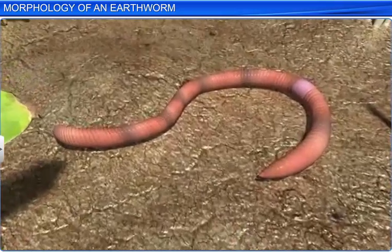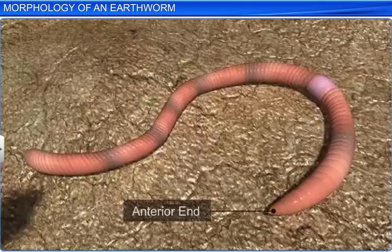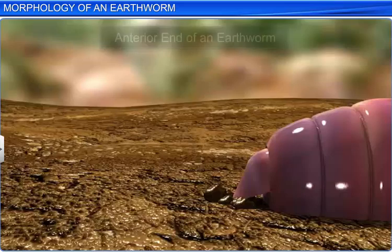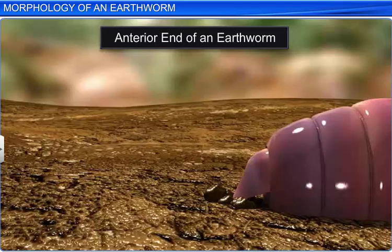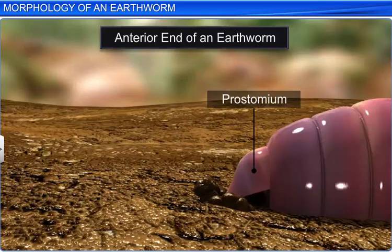The body of an earthworm can also be differentiated anteriorly and posteriorly. Although the anterior and posterior ends look similar, the anterior end is distinguished by a wedge-shaped structure called the prostomium. The prostomium is a sensory organ and also helps to open cracks in the soil and facilitate the movement of the earthworm.